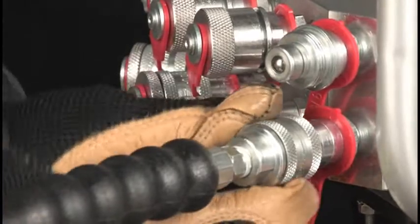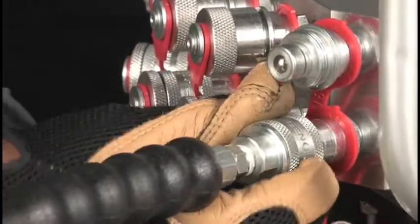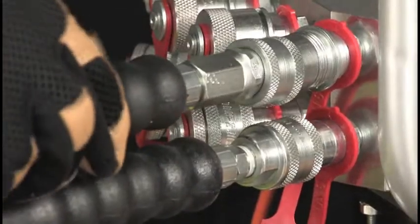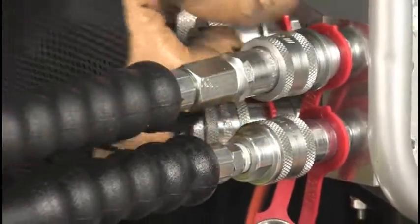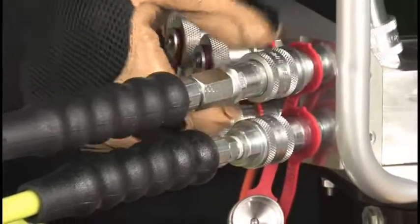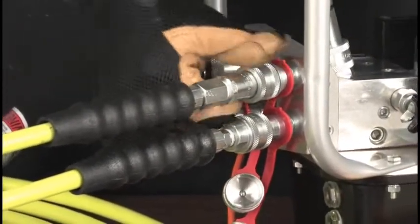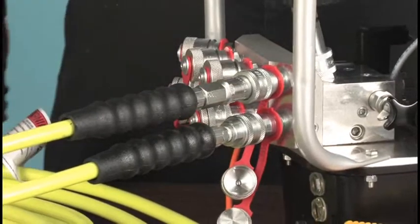The couplers screw together with about 3 eighths of an inch thread length, but if they were to loosen even a sixteenth of an inch, the oil would be immediately stopped, protecting the operator from the possibility of a high-pressure oil injection. Do not defeat this safety feature by changing or modifying the fittings.